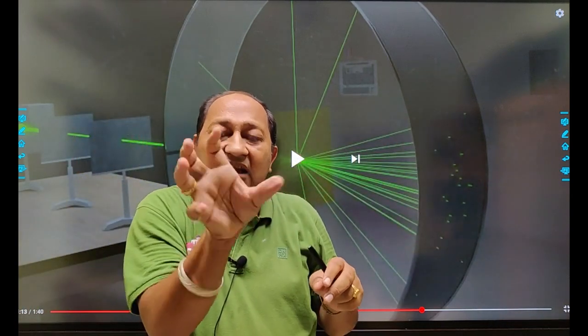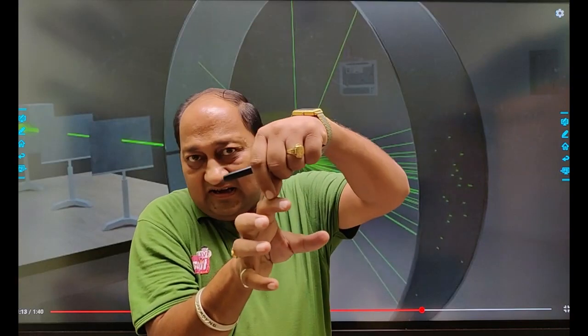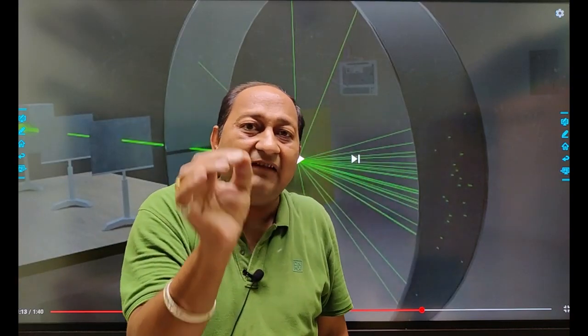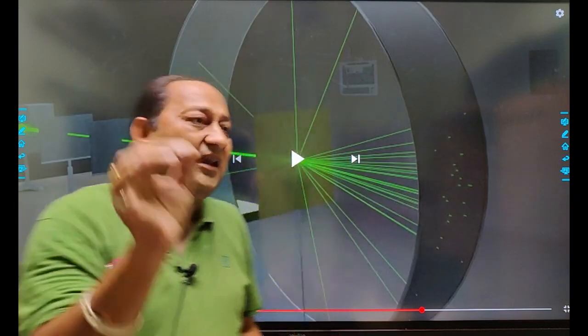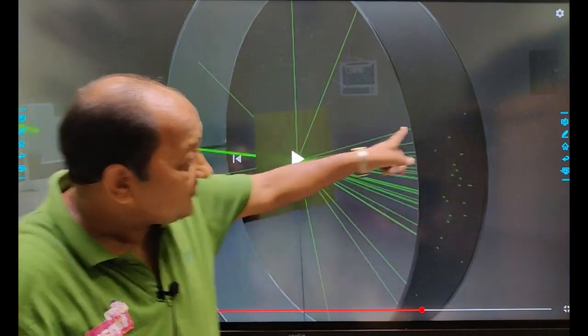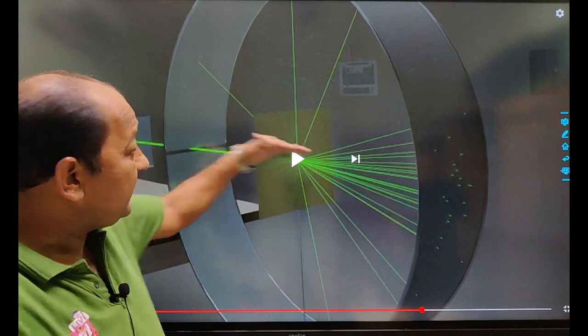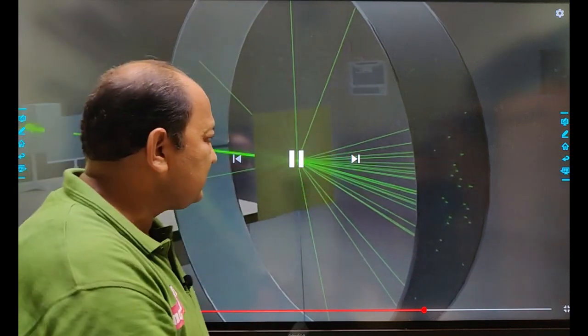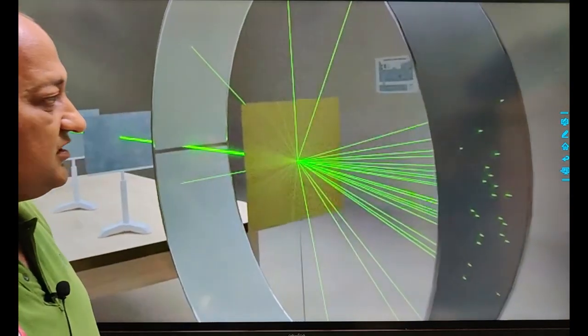There is a circular screen and any scintillation mark on that screen will give evidence of the coming alpha particle. See the maximum alpha particles are in the same plane as they were hitting on the foil.